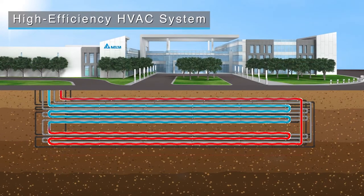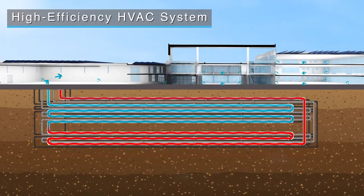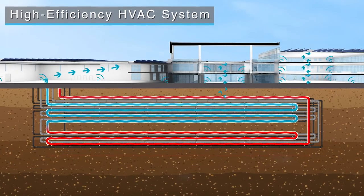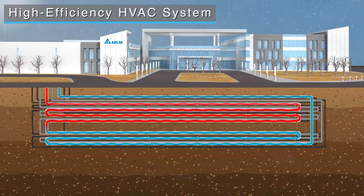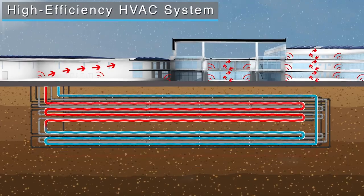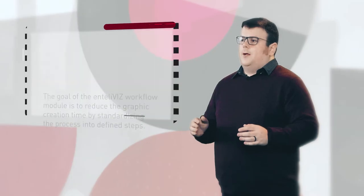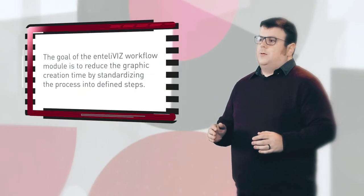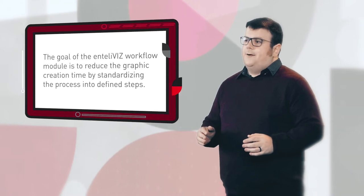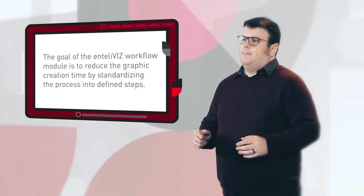Building automation system graphics are a very important part of a job. They are a graphical representation of your install. Low-quality graphics are usually associated with a low-quality install. If your goal is to create high-quality graphics, there can be a large amount of time and money associated with that. The goal of the Intelliviz Workflow Module is to reduce the graphic creation time by standardizing the process into defined steps.